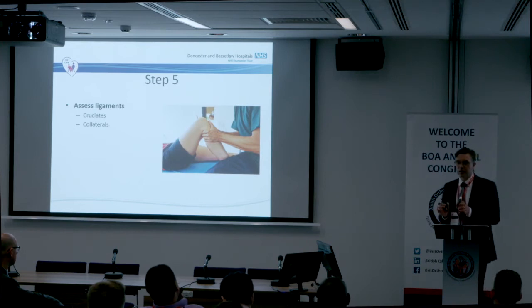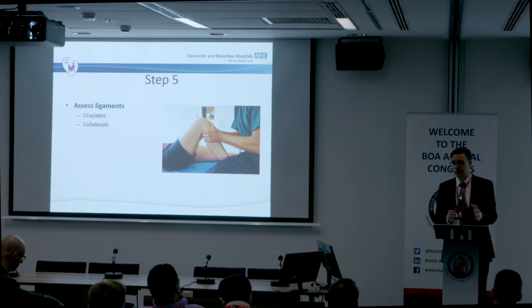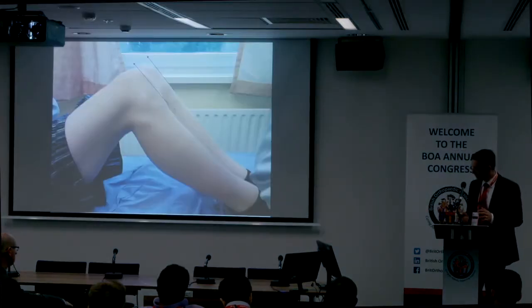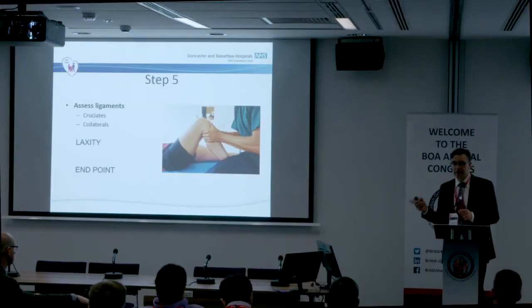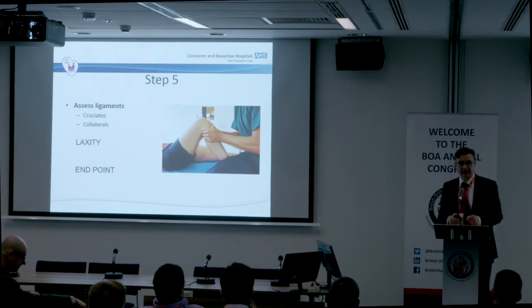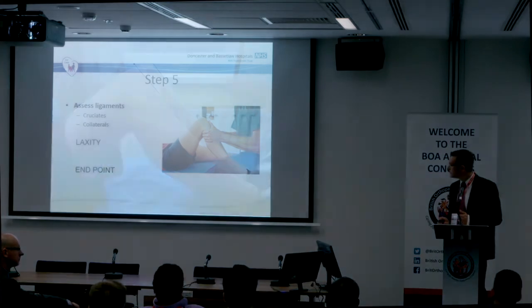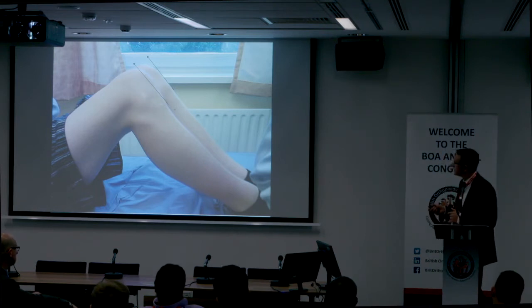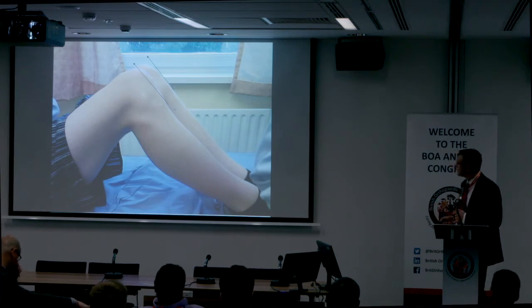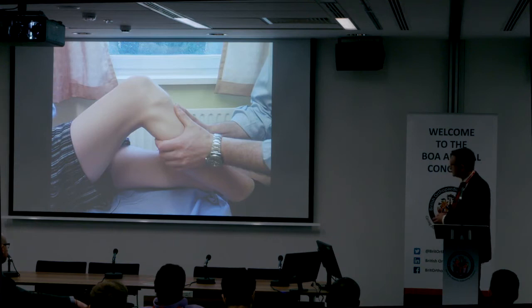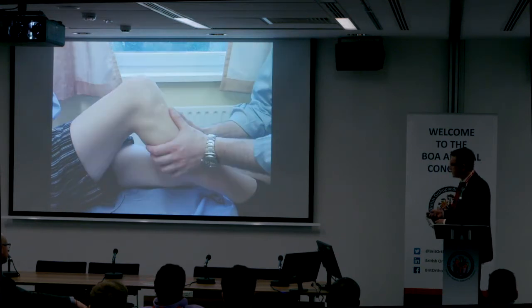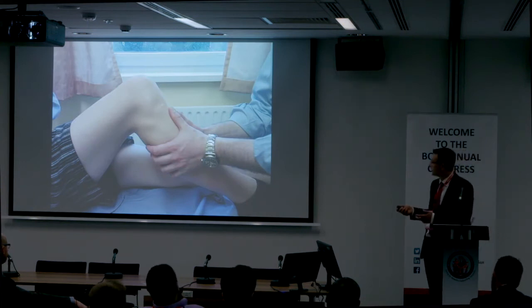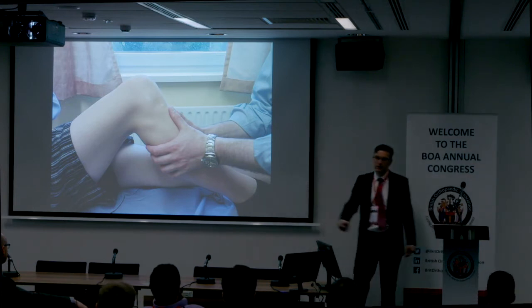There are different ways of assessing ligaments. I like to do cruciates first, then collaterals — if your system is collaterals first then cruciates, I don't mind. What you're interested in is laxity and end point. Patients complain of instability, but you assess for laxity, and I want to know what the end point feels like. I would start with the posterior cruciate ligament. Put the knees together at 90 degrees with the heels together. The examiners often talk about having a pencil against the tibia — the tibia is behind the femoral condyles in a sagged PCL-deficient knee, whereas this side is normal. Then do your posterior draw and your anterior draw — you can clearly see movement. The quadriceps active test is where you have your hand down here and ask the patient to contract, and you'll see the movement.